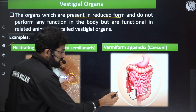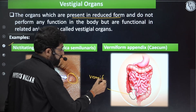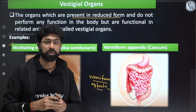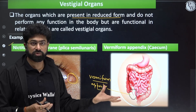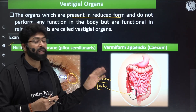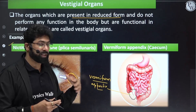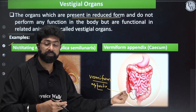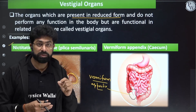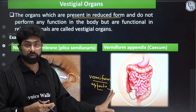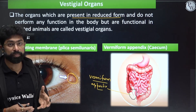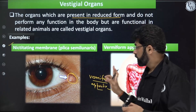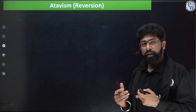The vermiform appendix is a vestigial organ in humans. Ancestral humans lived on trees and fed only on plant-based foods, so the appendix was useful for cellulose digestion. With changes in diet, it has become vestigial — it still has some lymphoid function defending the body, but it is no longer used for cellulose digestion. Only the cecum remains, which harbors some useful microbes.